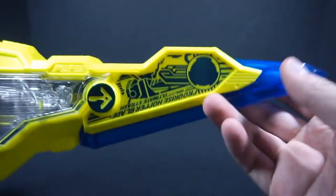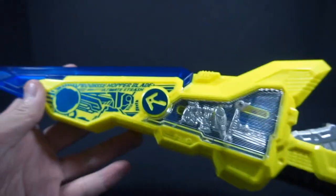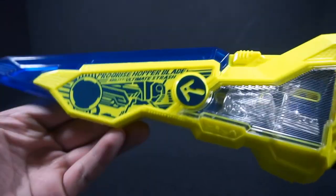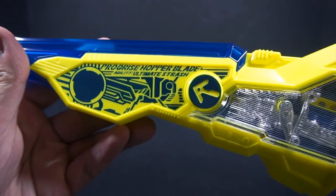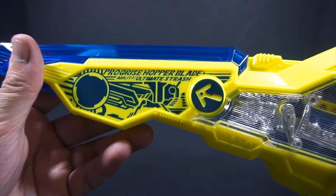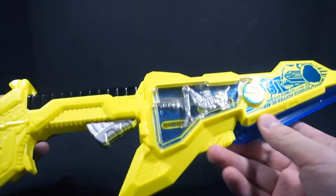Obviously this sword is actually in vein of a Progrise Key, which is pretty interesting as you can see from the arrow there. You can see the cover of the Progrise Key, although I kind of wish you were actually able to flip it because I don't think it would have been that difficult to manage. There you get Progrise Hopper Blade Ability Ultimate Slash.